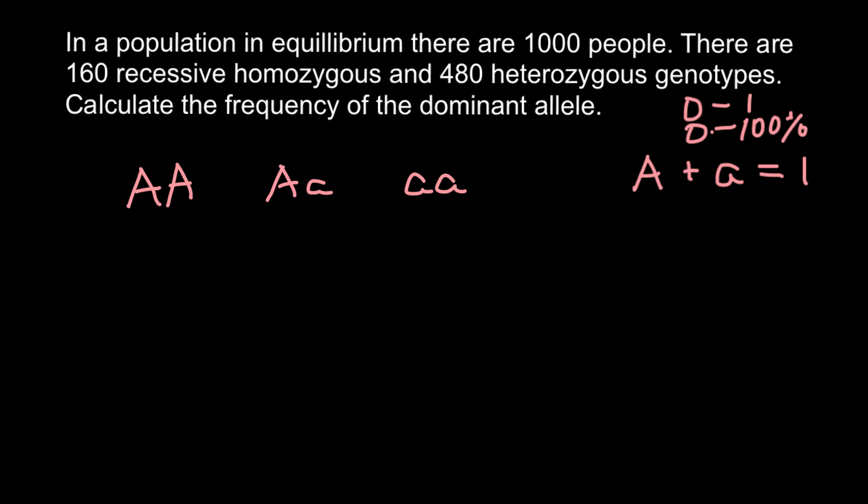We are told that 160 of them belong to the recessive homozygous genotype. So 160 people belong to this genotype. We are told that 480 people belong to the heterozygous genotype. And total number of people are 1000.